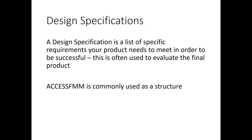A specification is a list of specific requirements your product needs to meet in order to be successful. This is often used to evaluate the final product. ACCESS FM is commonly used as a structure — that breaks down into: Aesthetics, Cost, Customer, Environment, Size, Safety, Function, and Material.